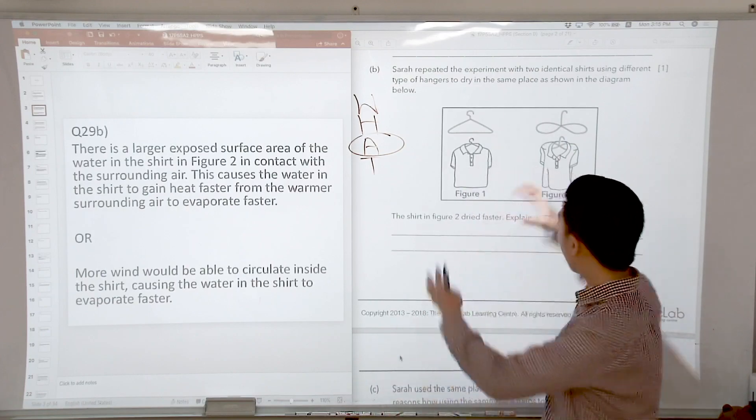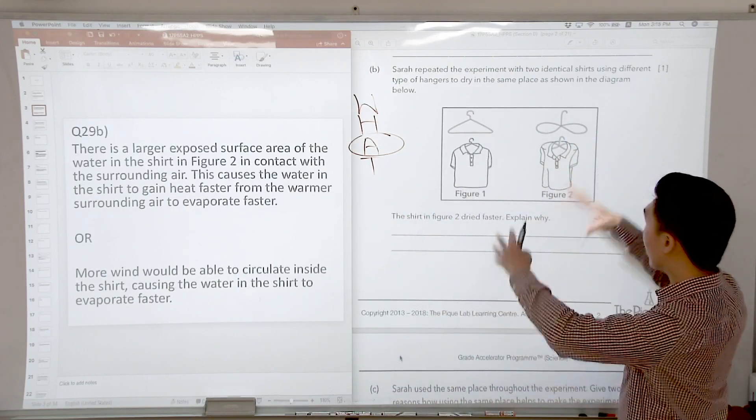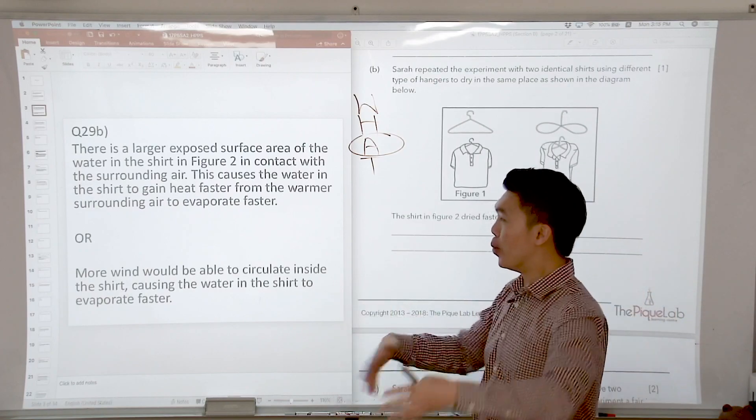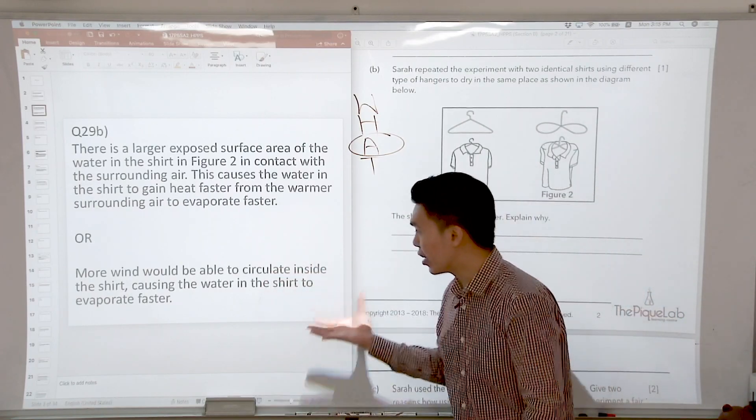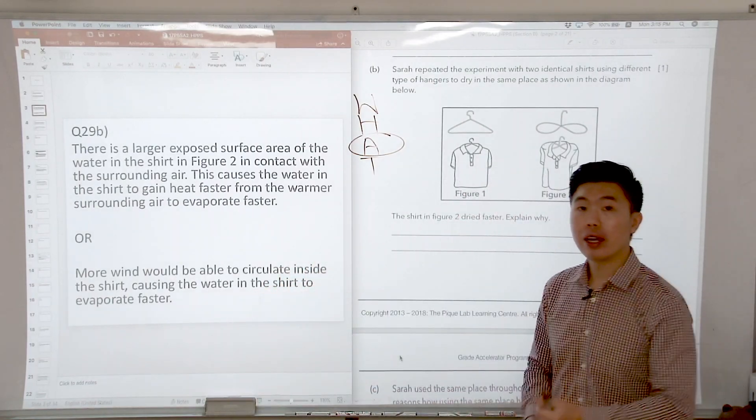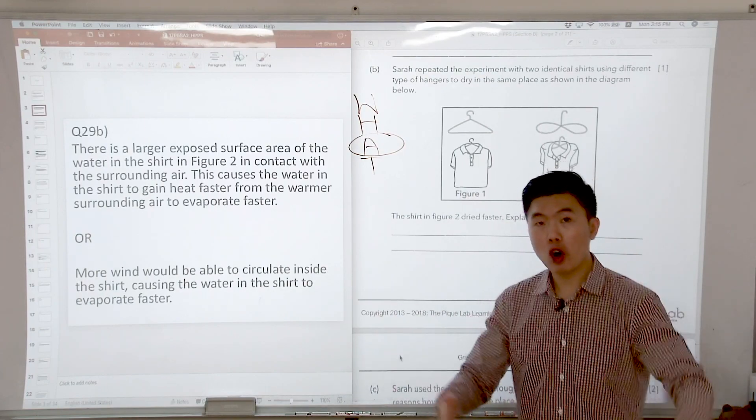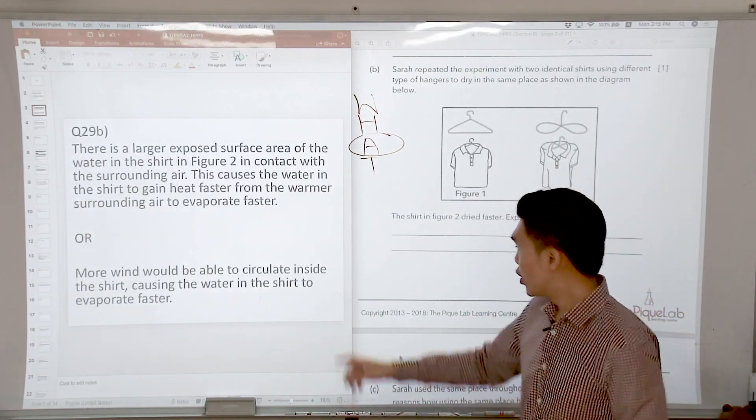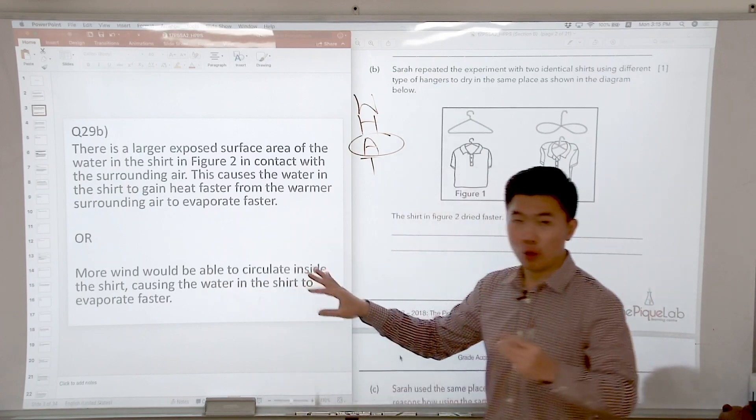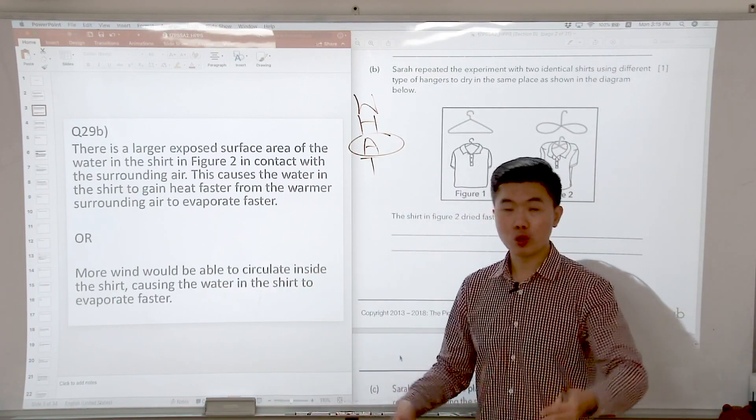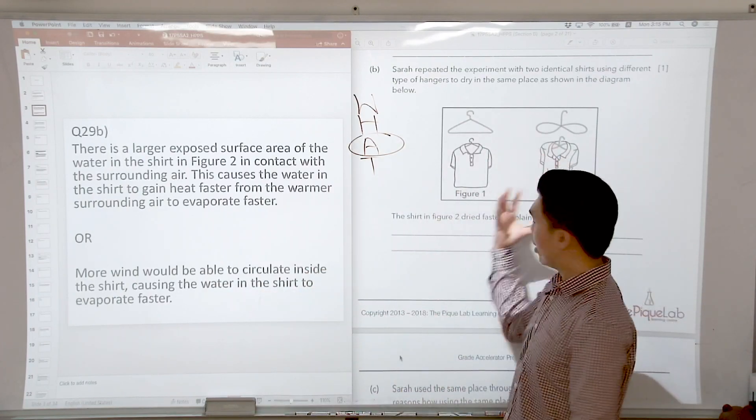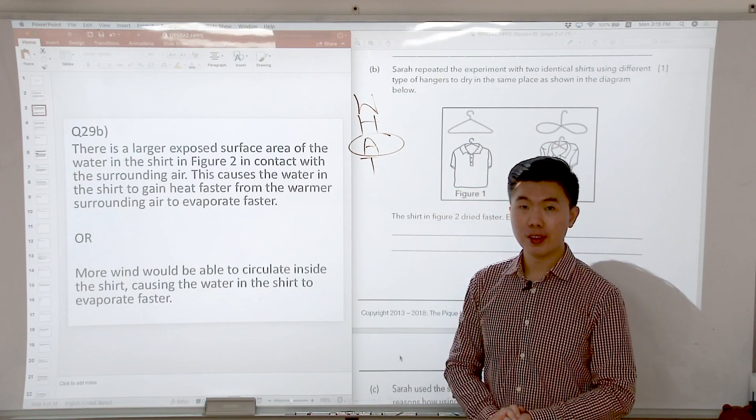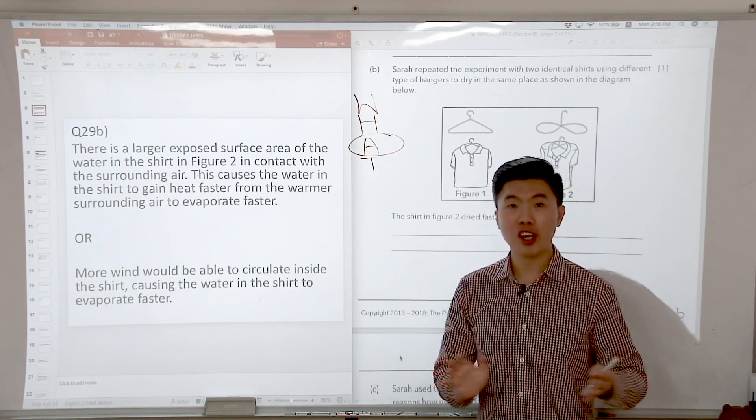It can also be argued that because it has a larger exposed surface area, it's more airy, so more wind will be able to circulate inside the T-shirt. And what did we learn about presence of wind? Presence of wind will cause water to evaporate faster. So we say that the water in the T-shirt will evaporate faster due to the presence of wind in the T-shirt. So that is for question 29.